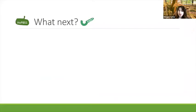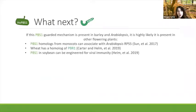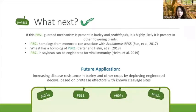Bringing it back to the larger picture: if this PBS1-guarded mechanism is present in barley and Arabidopsis, it's highly likely present in other flowering plants. We know wheat has a PBR1 homolog. The future application is that you can increase disease resistance in barley and other crops by deploying engineered decoys based on protease effectors with known cleavage sites — creating different PBS1 decoys and putting them back into your plant of interest to create new kinds of pathogen resistance.